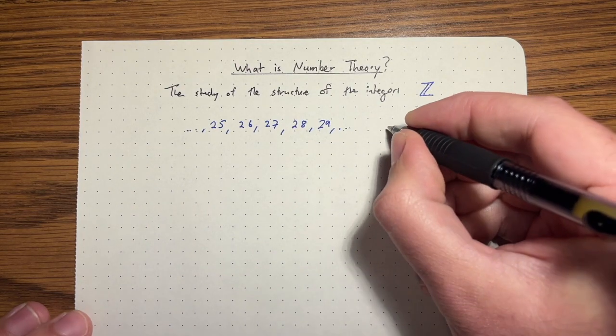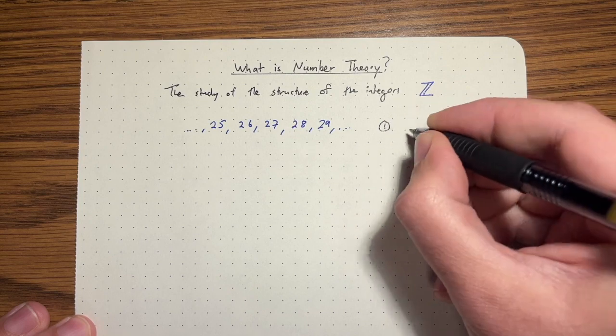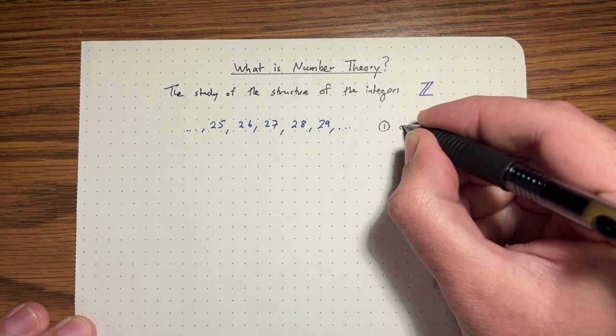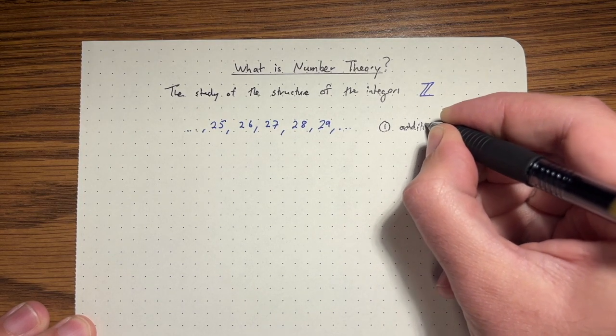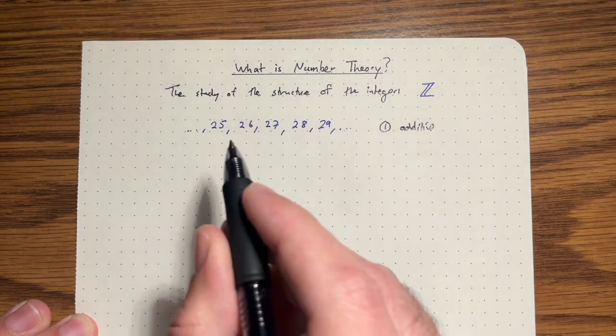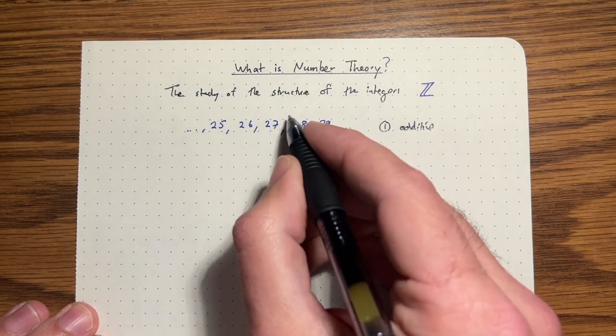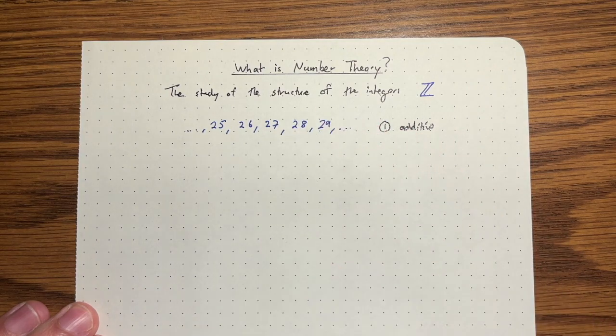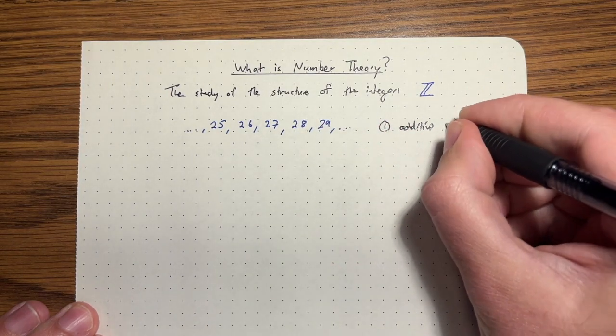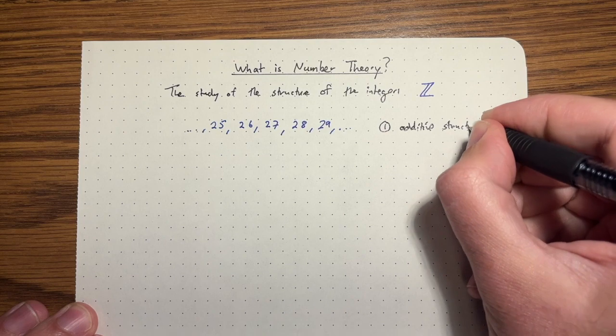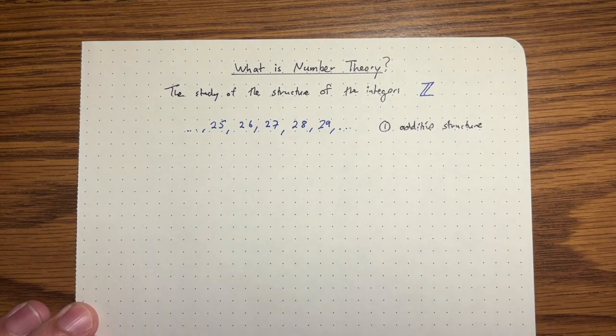But so far we're only talking about what I'd call the additive structure. So what number follows, 28 follows the number 27, so it's one plus 27, that's one before 29. This is talking about the additive structure, how the numbers are arranged on the number line.